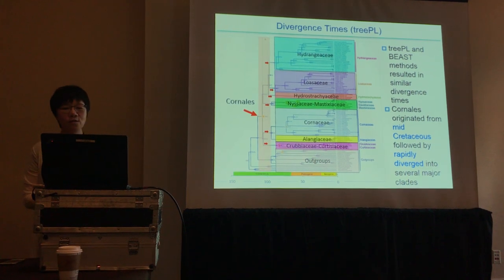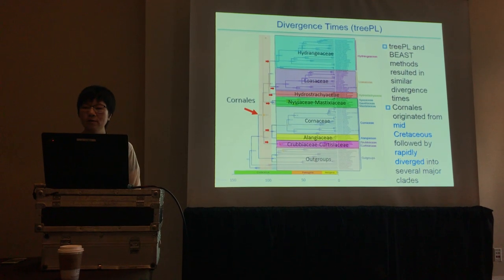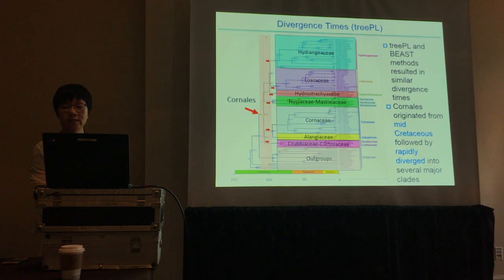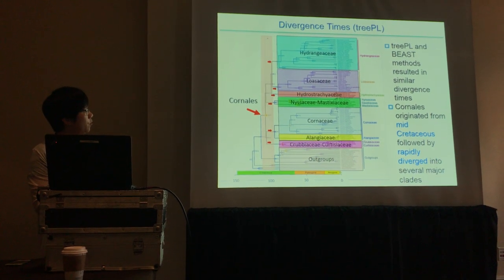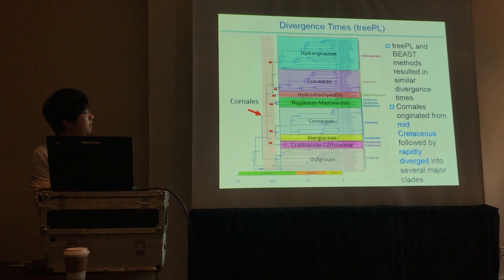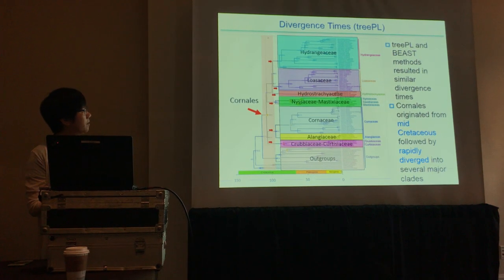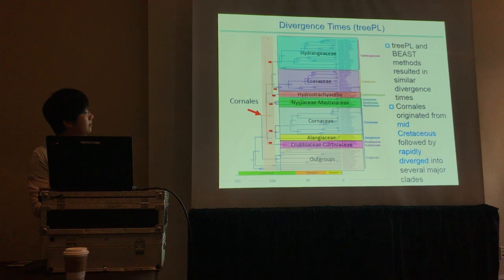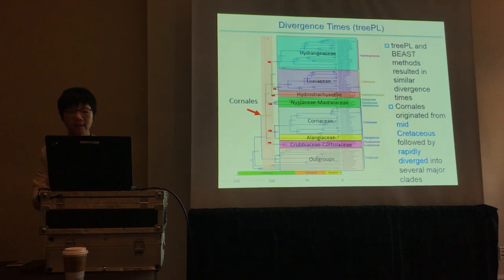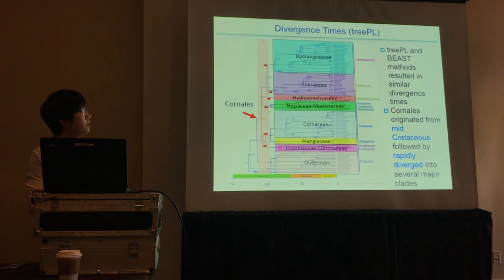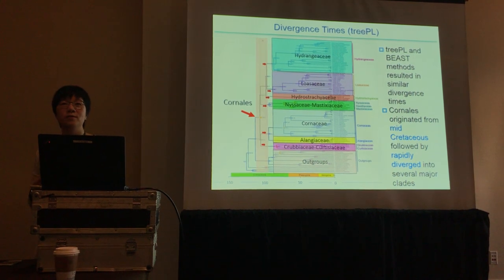The dated phylogeny was calibrated with eight fossils, and results from both methods are very similar. They both suggest a middle Cretaceous origin of the crown group of Cornales, followed by rapid radiation into several major lineages — indicated by the red arrows — within a window of about 10 million years, as indicated by the different colors of the major lineages. By the late Cretaceous, all crown nodes of the present families had evolved, which is consistent with the prediction from the fossil data.